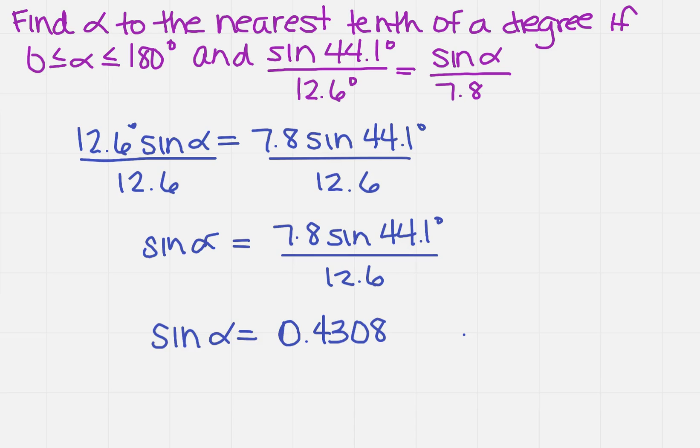So this is great, but I still need to know what alpha is. Now, in order to find that, remember, I'm going to take the inverse sine of 0.4308. Now, make sure when you actually do this, don't use the rounded number. Use that number that's still on your calculator. So when I do this calculation, I get that alpha is approximately 25.5 degrees.